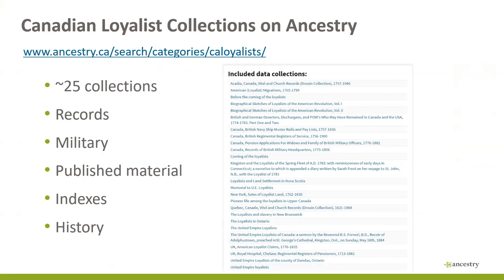Support for refugees, military service, and rewards for loyalty creates a good paper trail with records in the United States, Canada, and England. Many of these have been digitized and indexed by Ancestry. Records will include correspondence, land records, records of refugees, claims for lost property, and military records. Ancestry has put up about 25 or 30 collections related to the Loyalists on a special group page. It leads you to digitized records, some indexed, mostly military databases, and published materials like books.